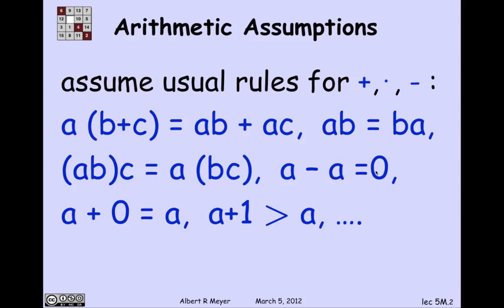This is called the additive identity. A minus A is 0, or actually additive inverse. 0 is the additive identity and minus A is the inverse of A. A plus 0 equals A is the definition of 0 being an additive identity. A plus 1 is greater than A. So these are all standard algebraic facts that we're going to take for granted and not worry about.